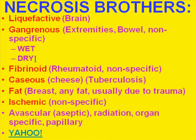As time goes on and water is absorbed, it's called dry gangrene. Fibrinoid necrosis is used particularly in rheumatic or autoimmune diseases to describe changes in the walls of blood vessels — almost always specific to autoimmune conditions. Caseous necrosis is seen in tuberculosis; 'caseous' means cheese, and it's a gross term describing tissue with a cheese-like consistency. Fat necrosis is necrosis of fat, usually due to trauma. Ischemic necrosis is due to lack of blood or oxygen, and avascular necrosis is almost identical to ischemic necrosis.